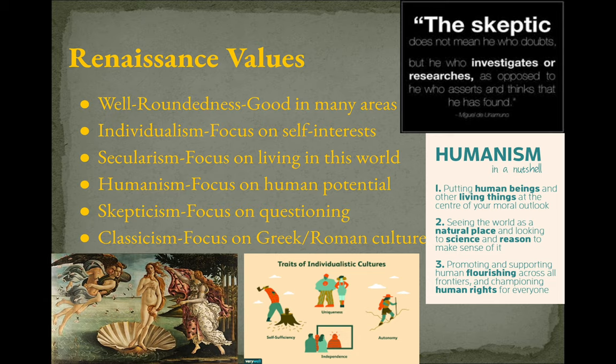Did they have the same idea of secularism then as we do today? No — it's changed over time, but this got the ball rolling on that. The last value is classicism, looking back at ancient Greece and Rome as a model to repeat and build upon. The idea of democracy and republic relates back to Greek and Roman culture, and that political system has continued. Some schools, especially on the East Coast, still teach Latin as part of respecting the classics of the ancient world.